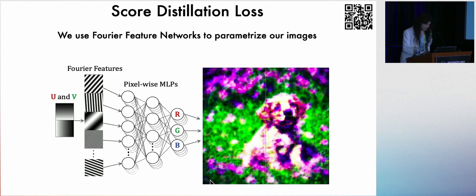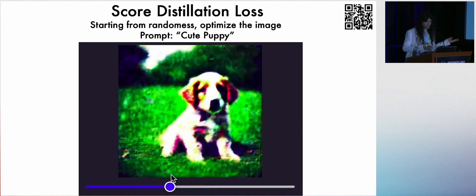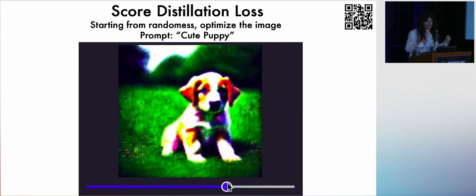An image is a function of X and Y to color. And so when we optimize using score distillation loss over the Fourier feature networks, we can get reasonable images, even when we use a latent diffusion model.